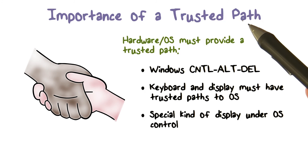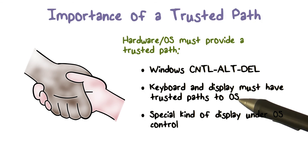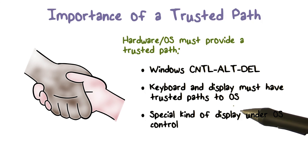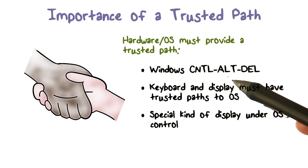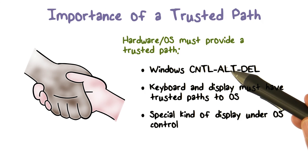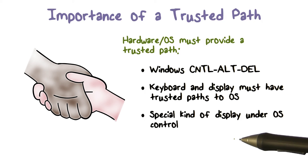One challenge with these kinds of things is: do users pay attention to something displayed, or a light on the keyboard, or something like that? If it's a red flashing light, maybe they do. But the key concept here is that a trusted computing path is something we want to understand.